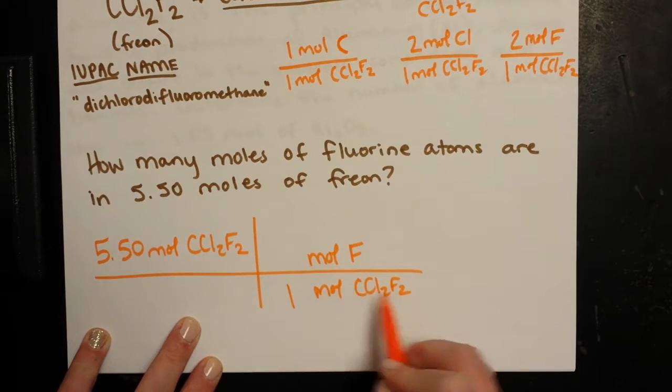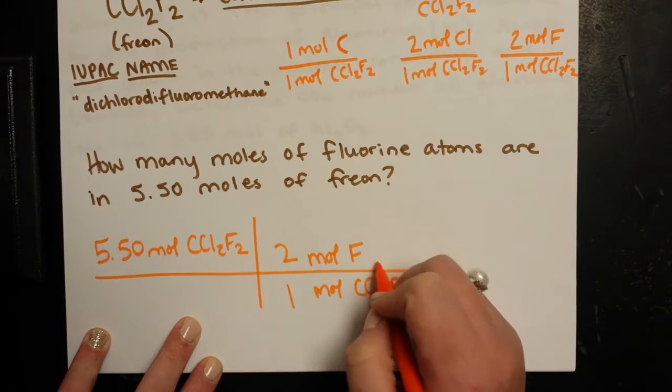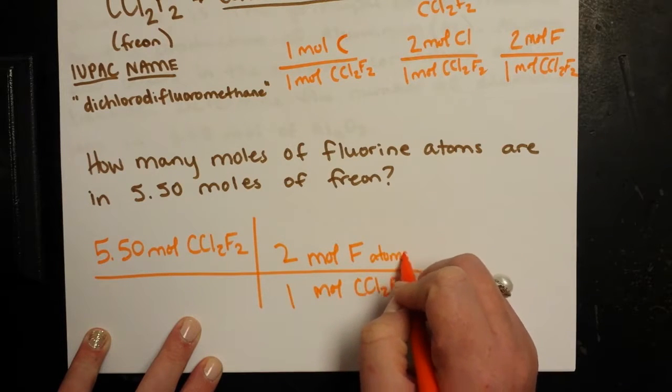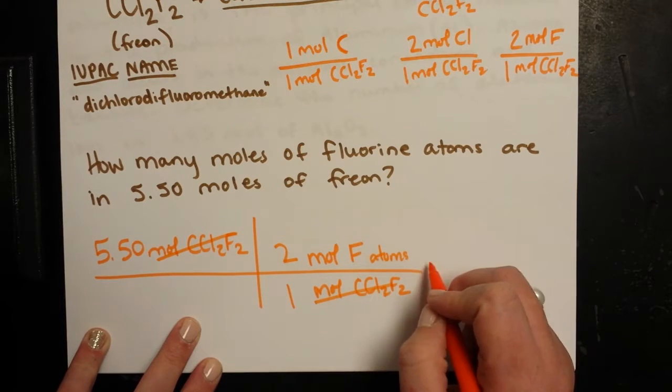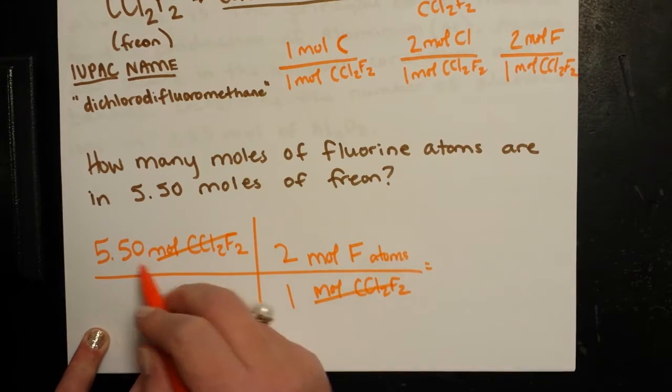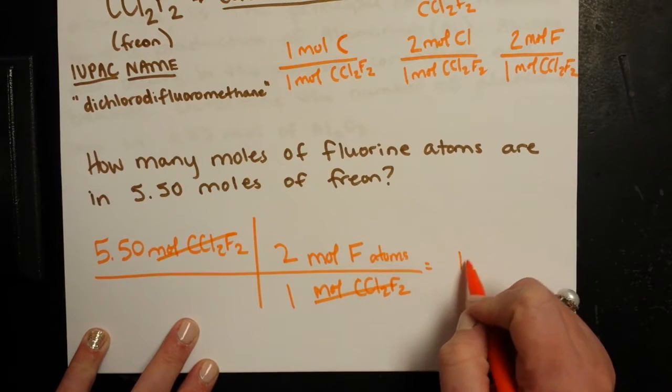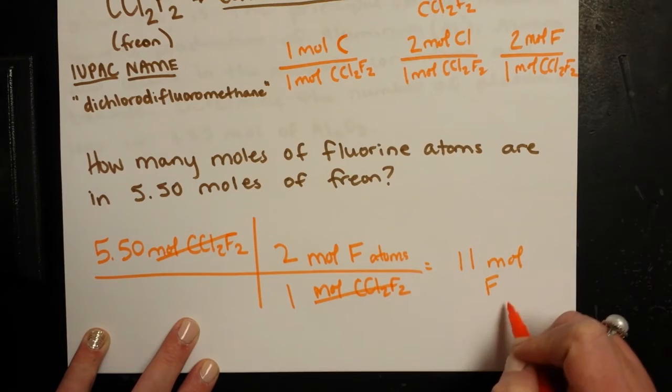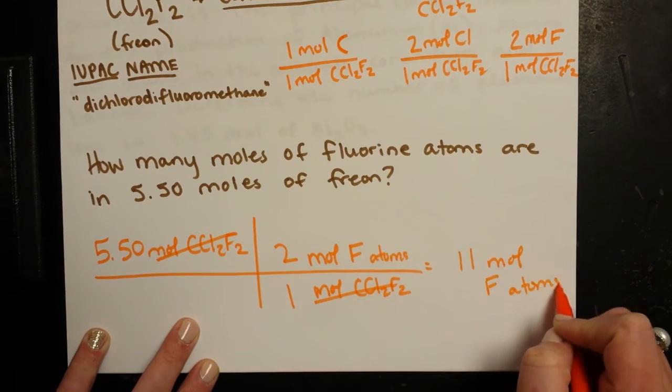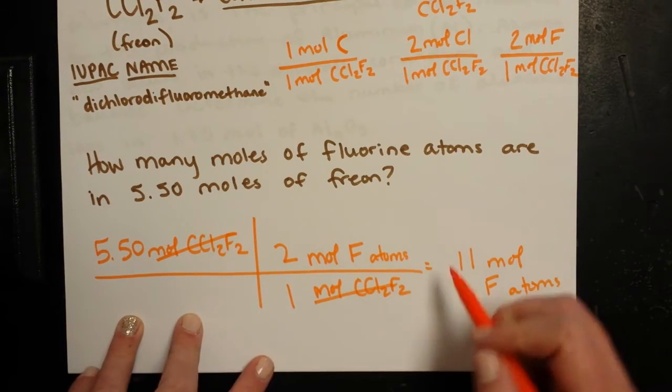I know for every mole of Freon, there's two moles of Fluorine atoms. That'll cancel. And so now I've got 5.5 times 2, so that should be 11 moles of Fluorine atoms. All right, there you go.